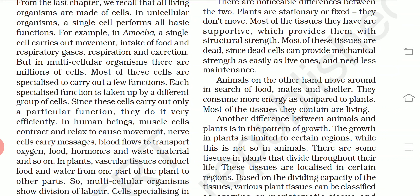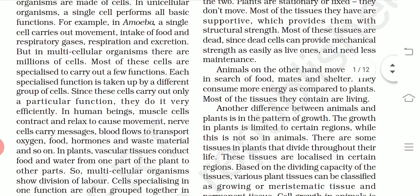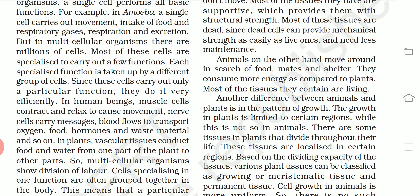Each cell is very effective in its work. In the human body, muscle cells contract and relax to cause movement, nervous cells carry messages, and blood flows and transports oxygen, food, hormones, and waste materials. In plants, vascular tissue conducts food and water from one part of the plant to another.